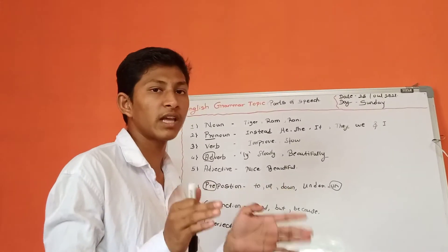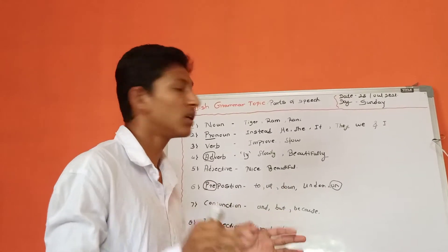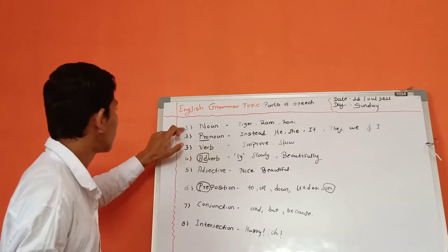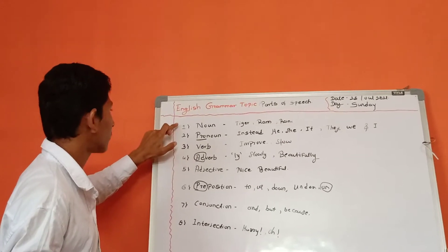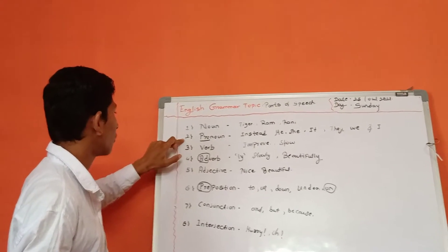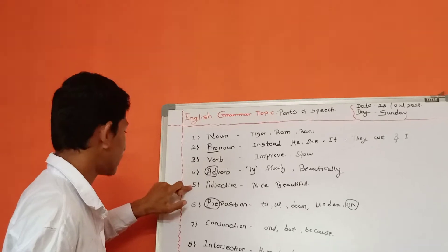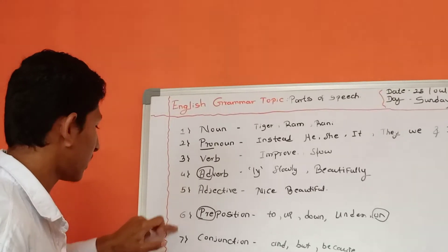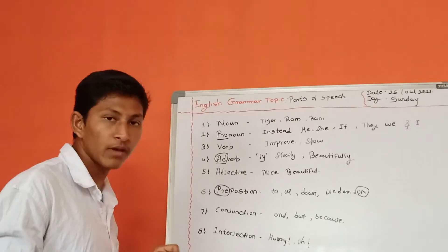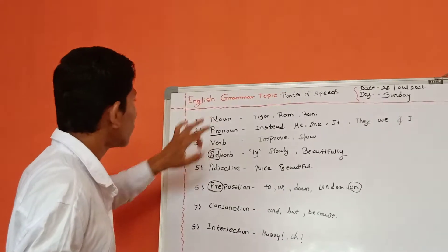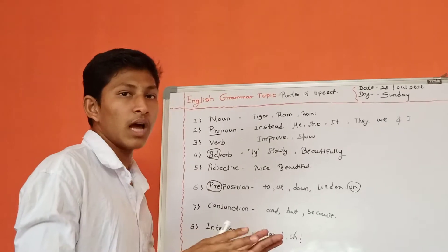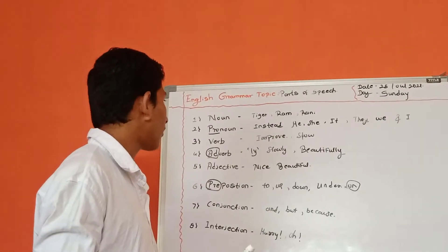There are 8 parts. I have listed them here: Noun, Pronoun, Verb, Adverb, Adjective, Preposition, Conjunction, and Interjection. In Noun there are 5 types — I will make another video about all of those.